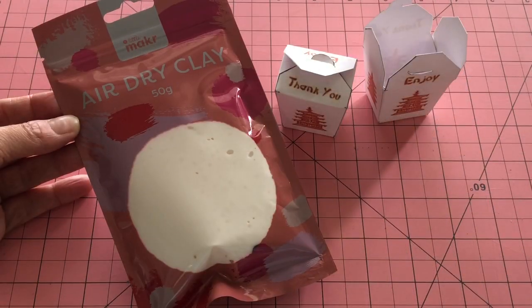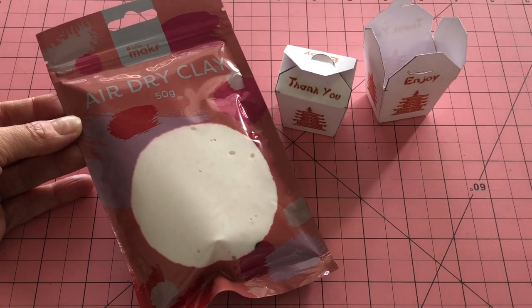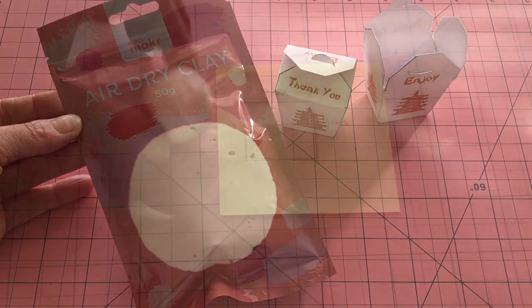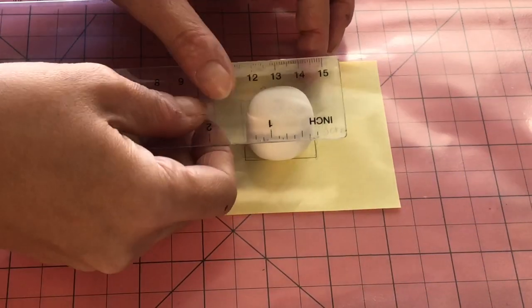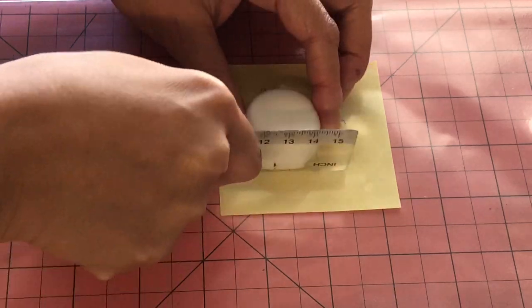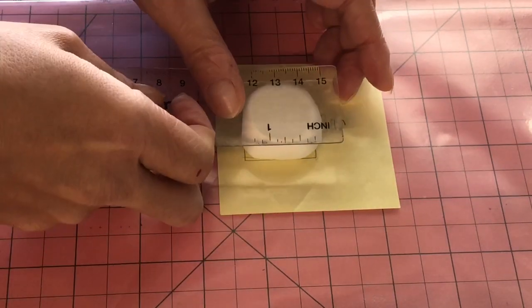Okay let's use air dry clay to make the food items from the set. Take a ball of white clay and gently press it into a square shape 3 by 3 centimeters. Use a flat non-stick tool like a plastic ruler.